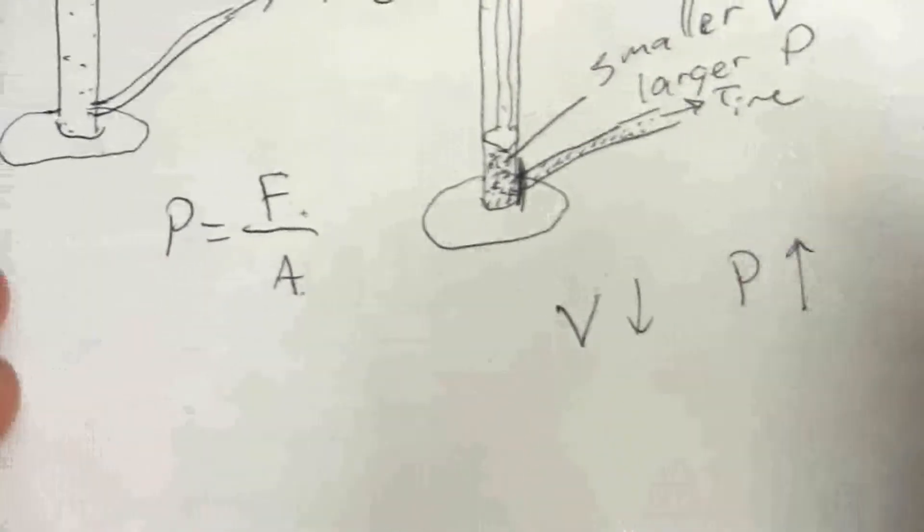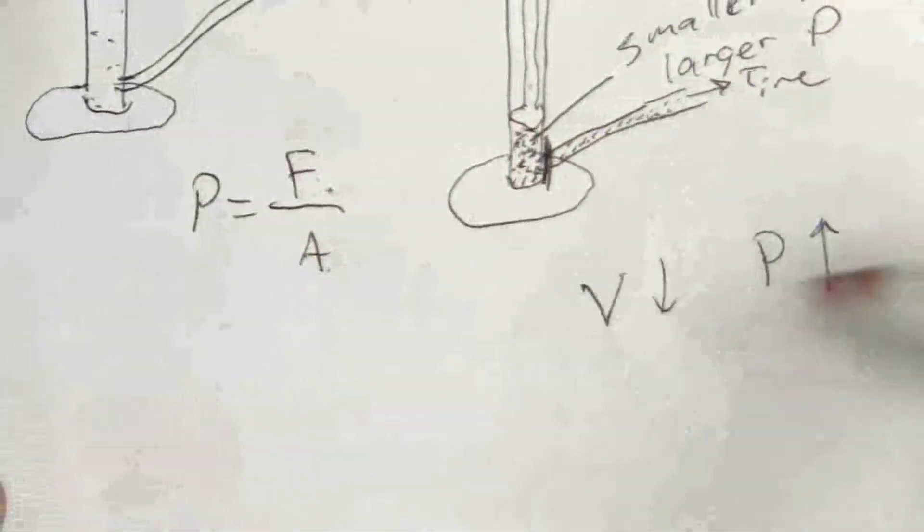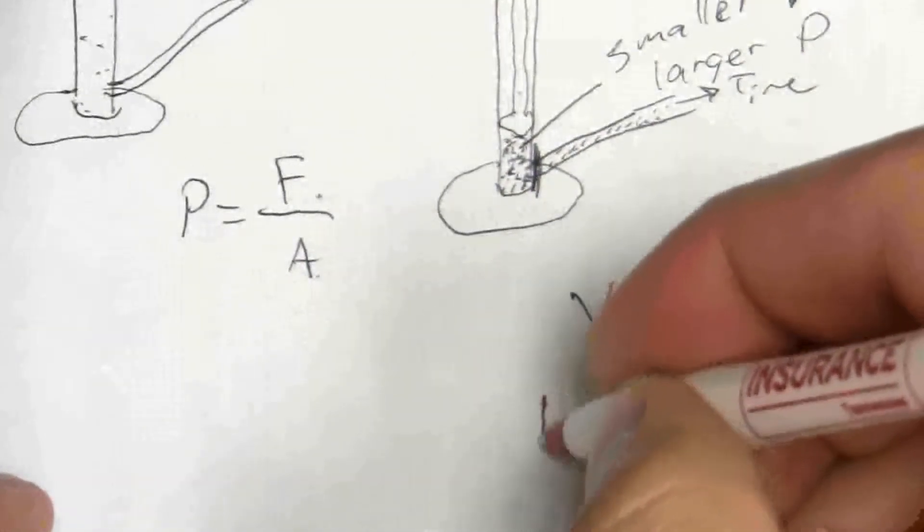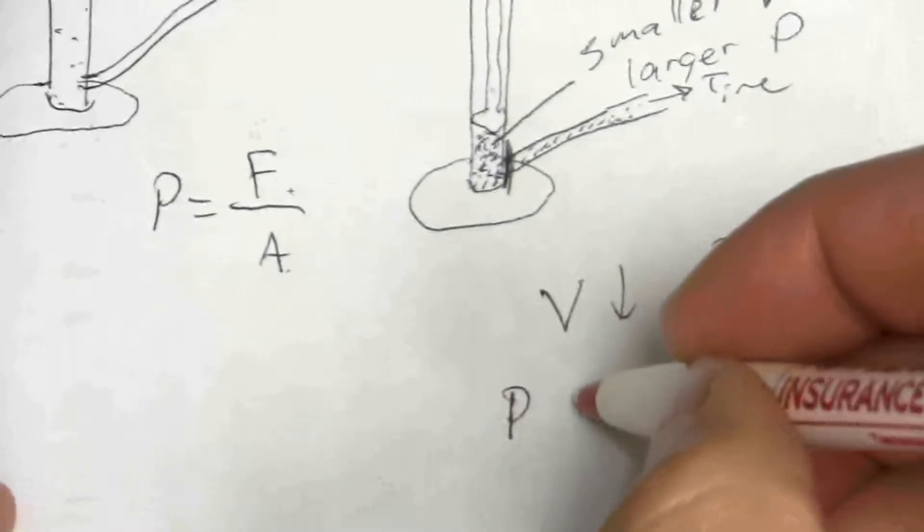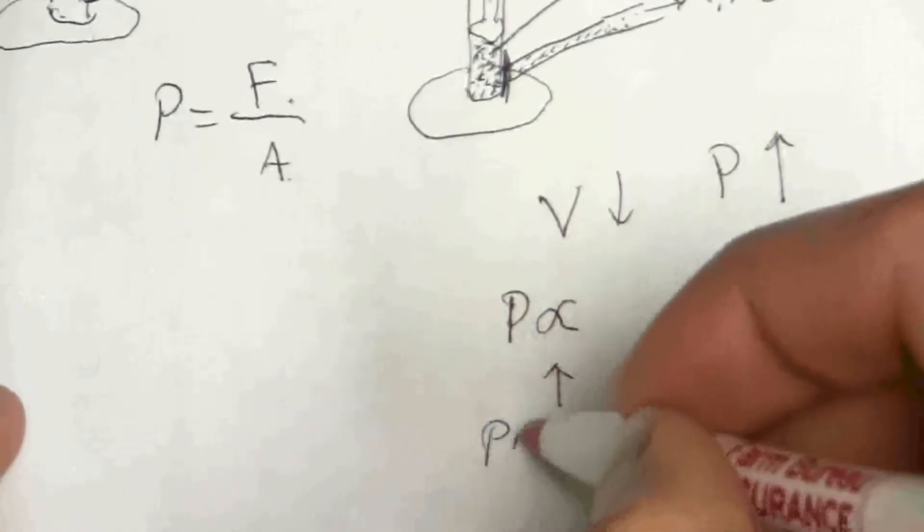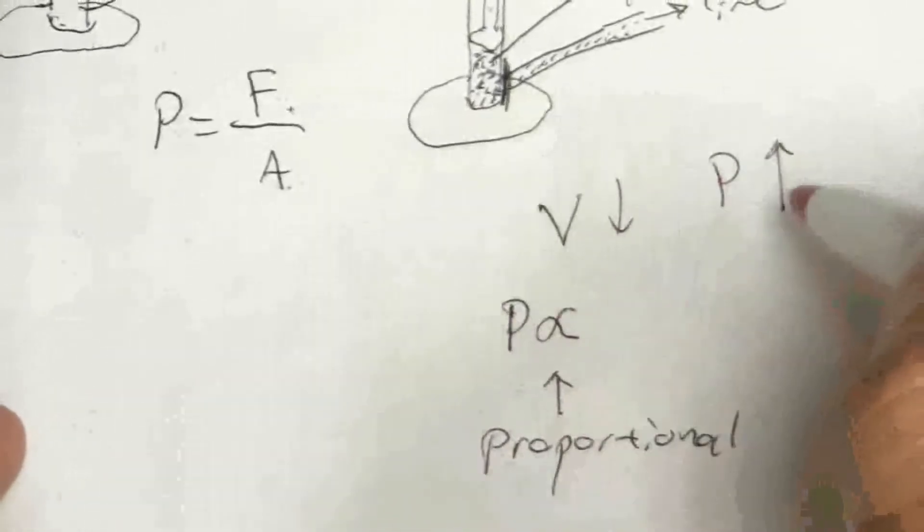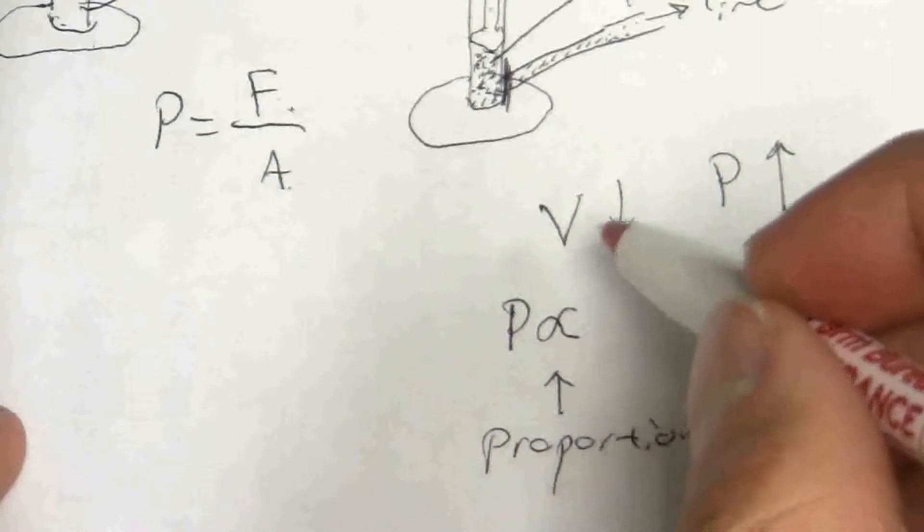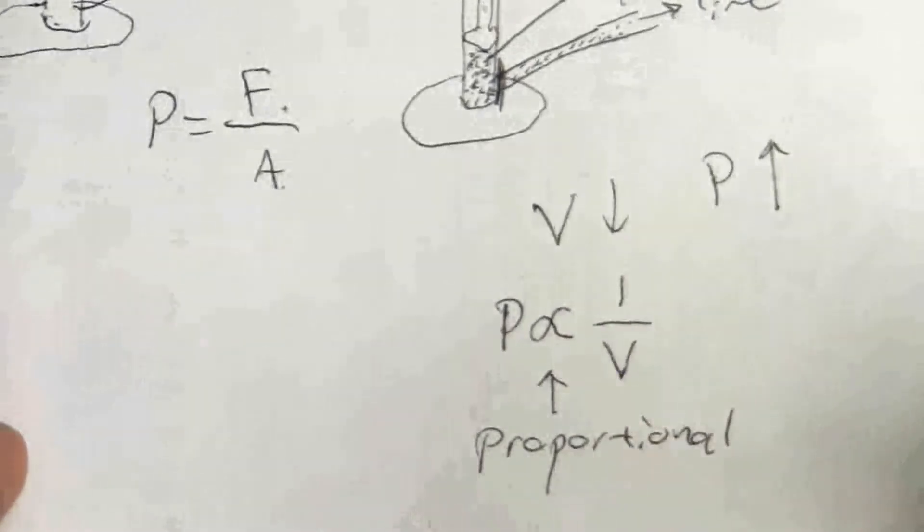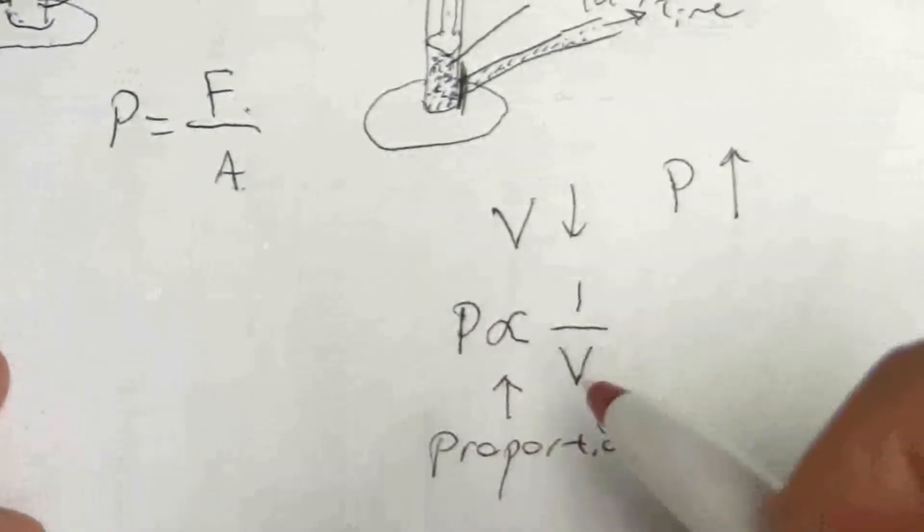And we could write this in terms of an algebraic expression, because what kind of a relationship is this? We would say the pressure is proportional. This is the symbol that means proportional. And the pressure is proportional to, it's not directly proportional to the volume, but it is inversely proportional. And so we write that as one over V.